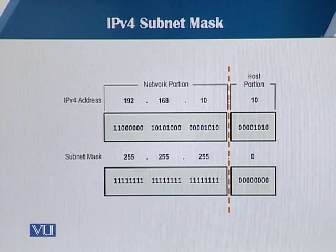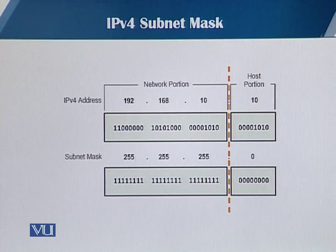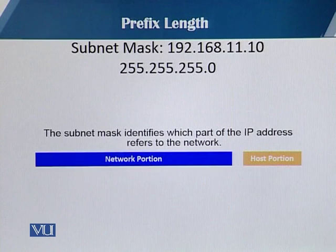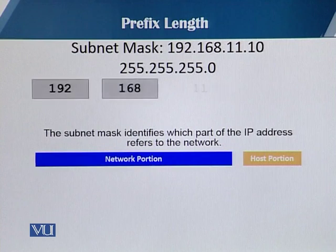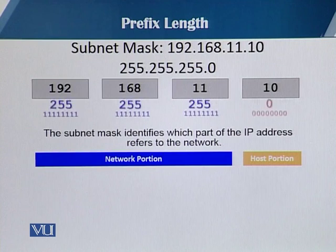As you can see from the slide, you have an IPv4 address 192.168.10.10 and a subnet mask 255.255.255.0. The subnet mask tells us the network portion of the IP address — the ones in the subnet mask correspond to the network portion. There is another way of indicating the network portion, called prefix length.